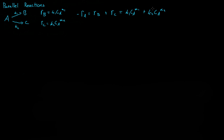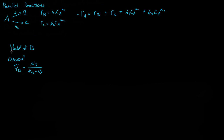Something that's really important in reactions is yield. There are two ways of doing this. We can do the overall yield of B. If we have a batch system, that would be the number of moles of B divided by the moles of A consumed — so moles of A initially minus moles of A afterwards. If we consume one mole of A but only get half a mole of B, then our yield is only 50%. To get a high yield, you want to slow down the reaction rate of C as much as possible.